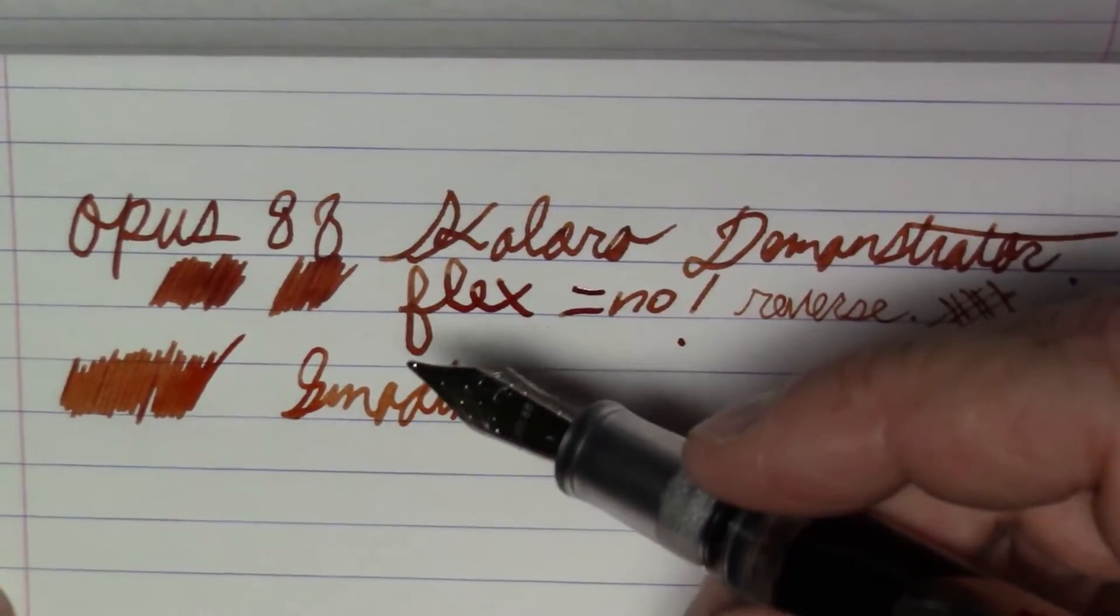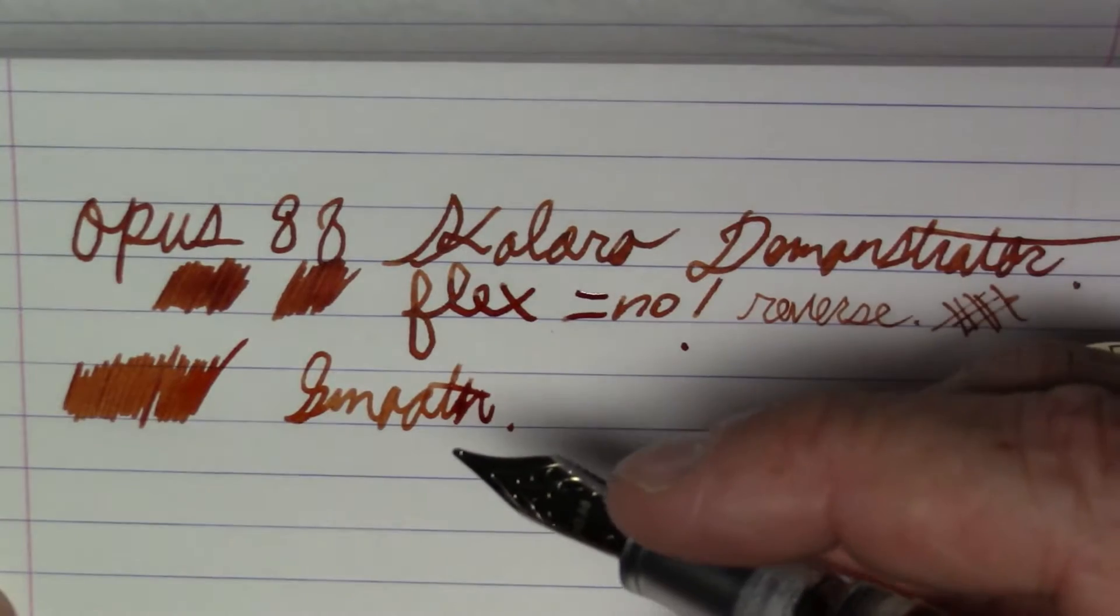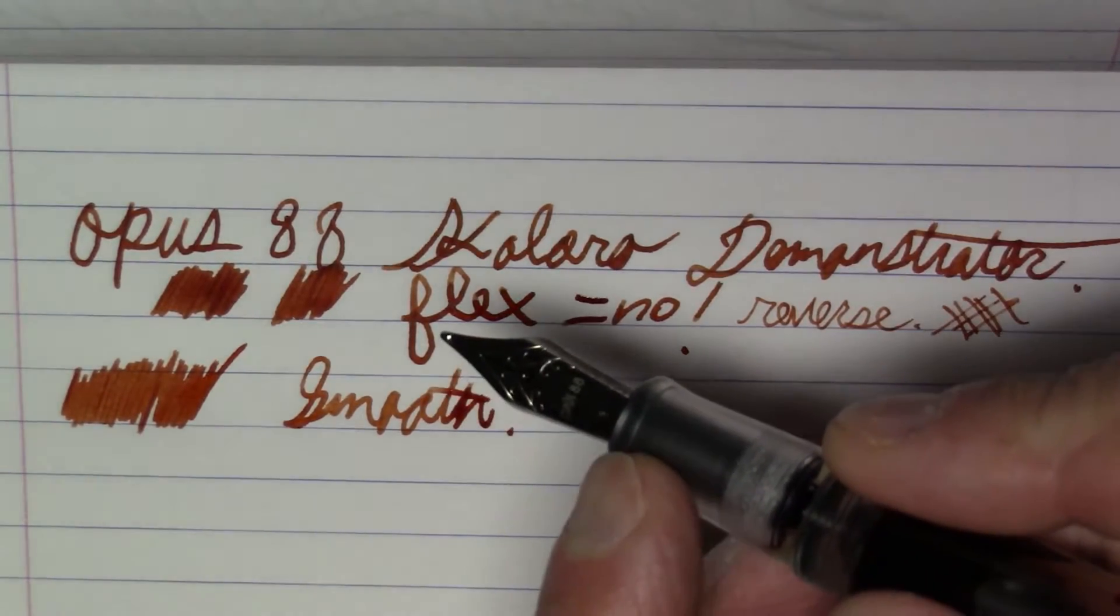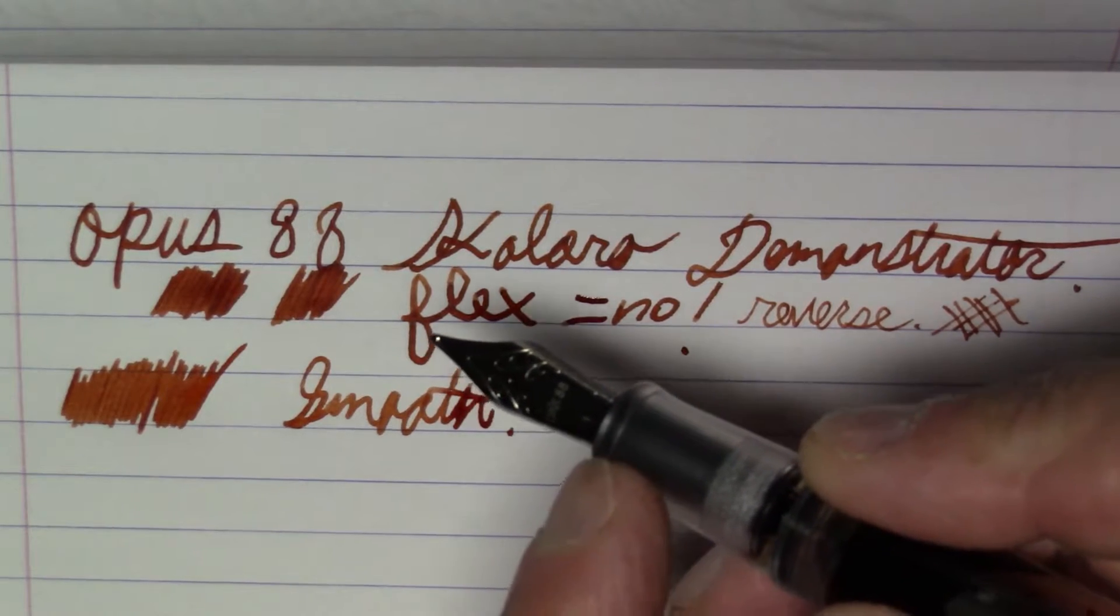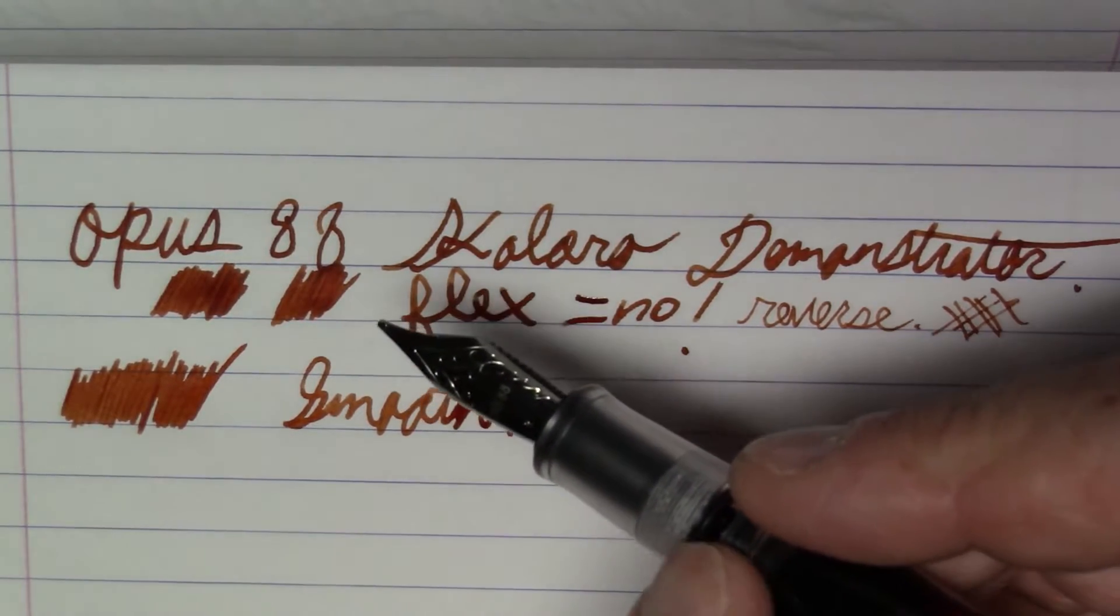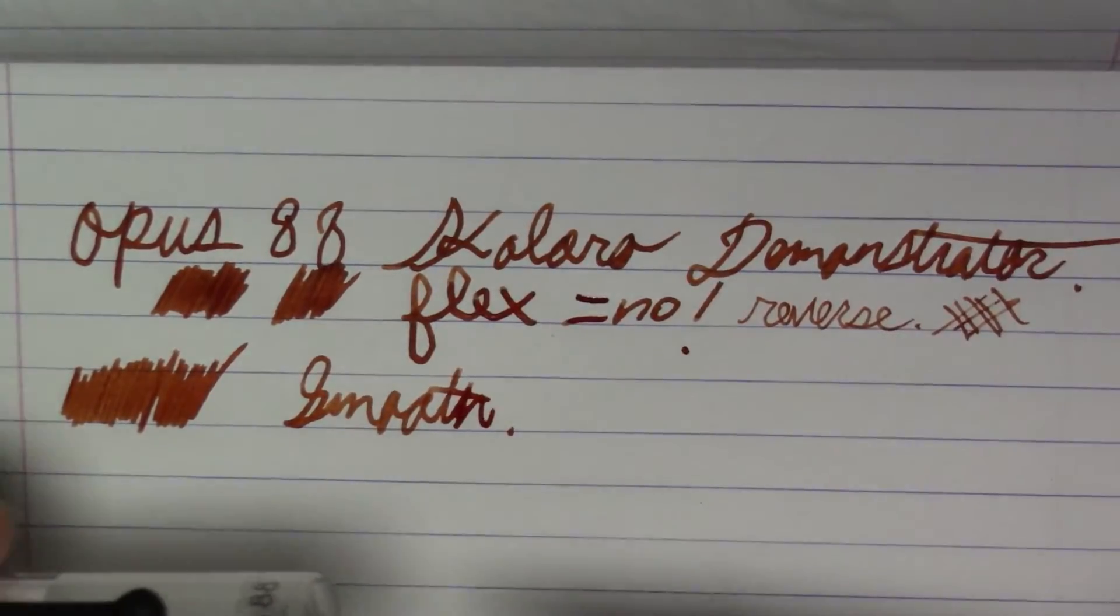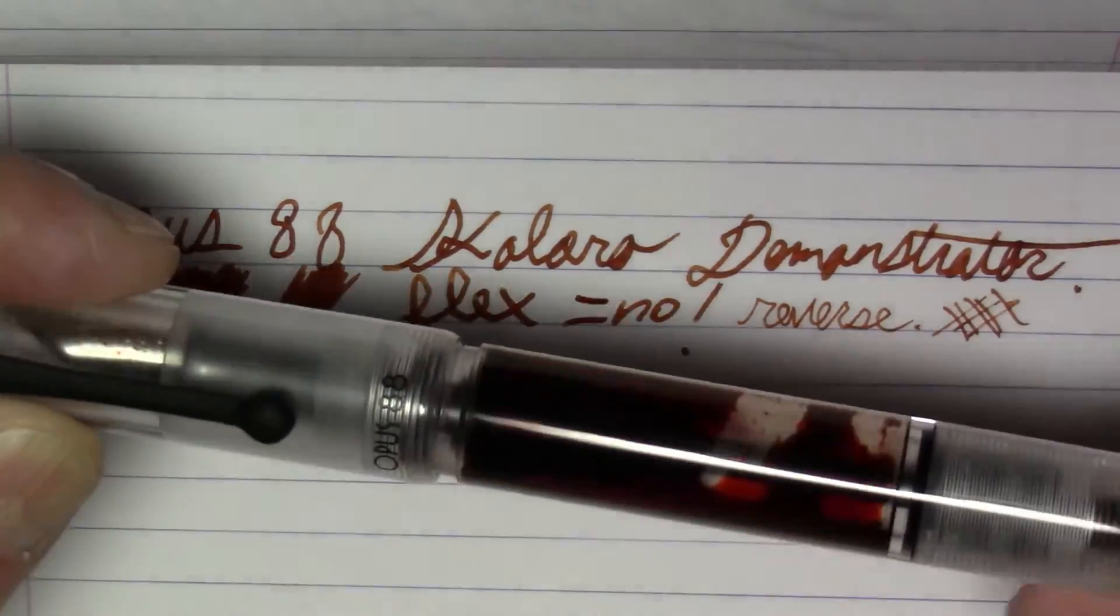For a broad pen, the section is actually quite comfortable to hold. It does have a little bit of a lip here at the end of the section, which is nice, and the threads here are not bothersome at all.